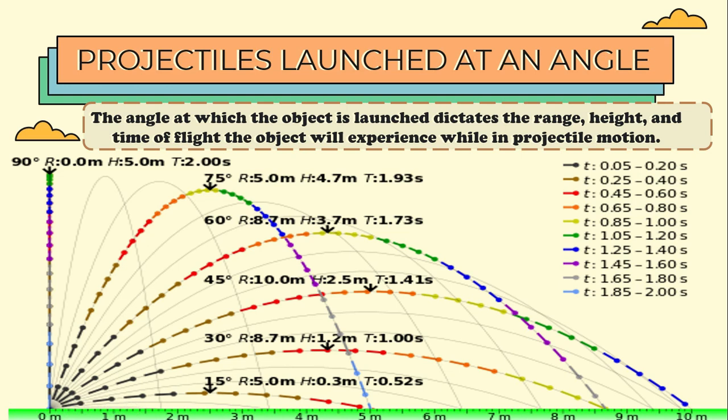While in 75 degrees, the range will be back into 5 meters, at the height of 4.7 meters, with a time of 1.93 seconds. But if we project an object directly to 90 degrees, there would be no range, because the object will just come back to its original point. But the height will reach up to 5 meters, with a total time of 2 seconds.